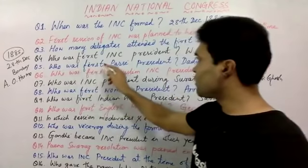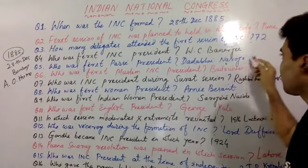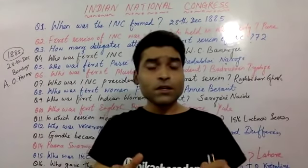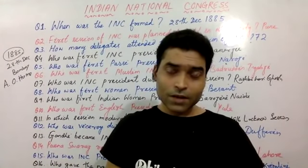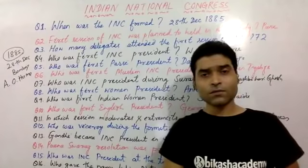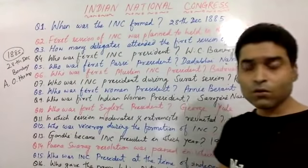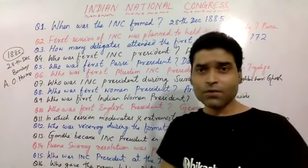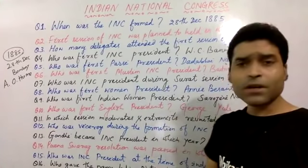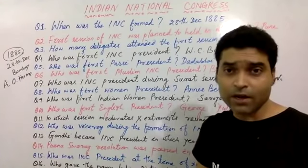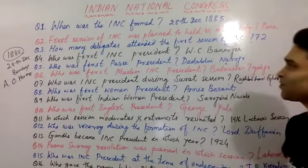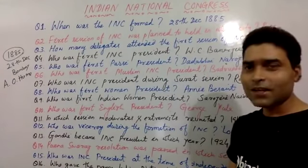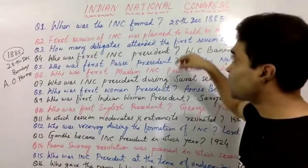Question number 5: who was the first Parsi President of INC? Dadabhai Naoroji. The first Parsi President was Dadabhai Naoroji. Dadabhai Naoroji is called the Grand Old Man of India. Naoroji is also called the Father of Indian Economics, and he gave the Drain Theory, which talks about how the British exploited India. He was also the first Indian to be a member of the British Parliament.